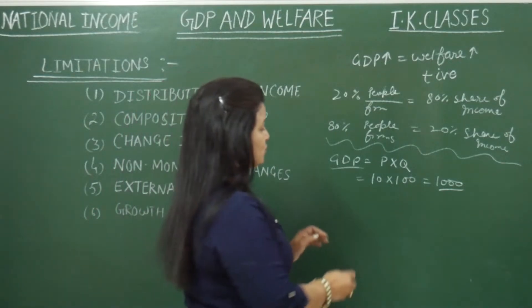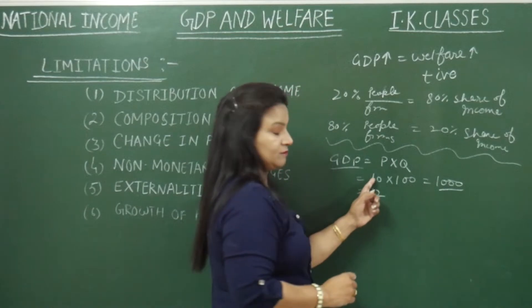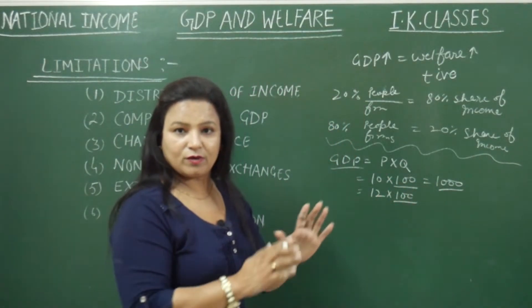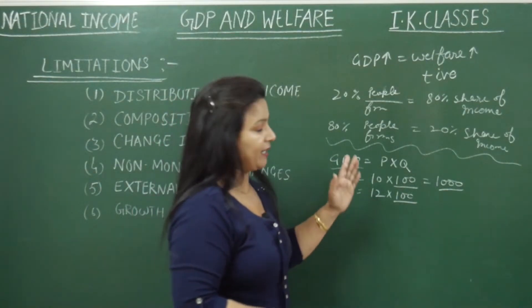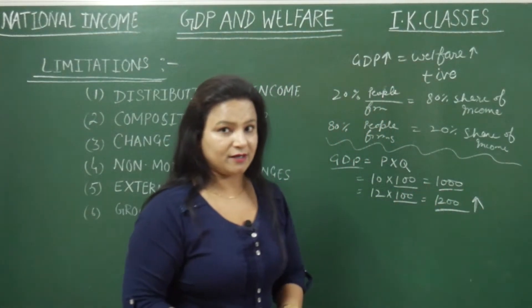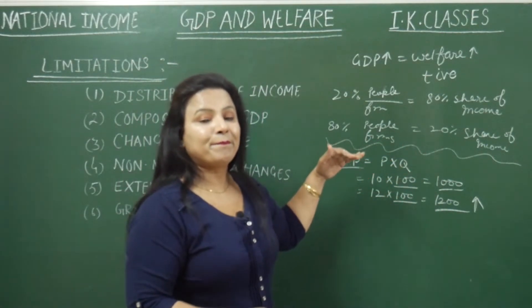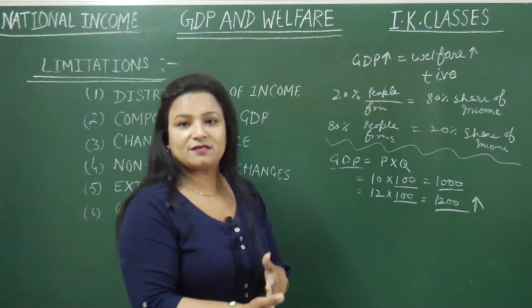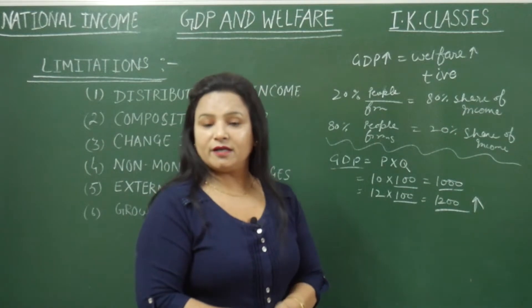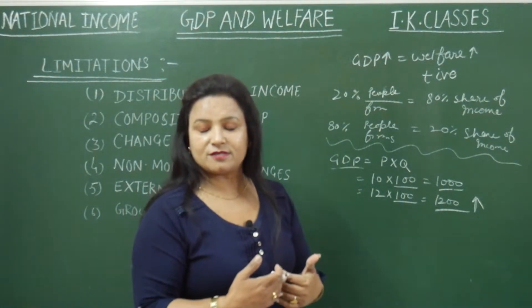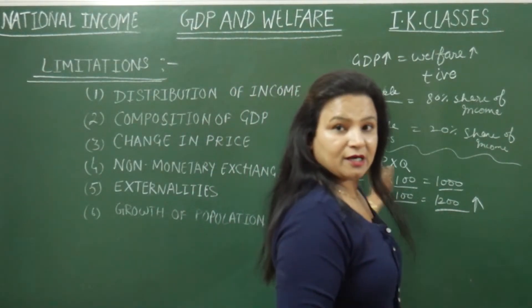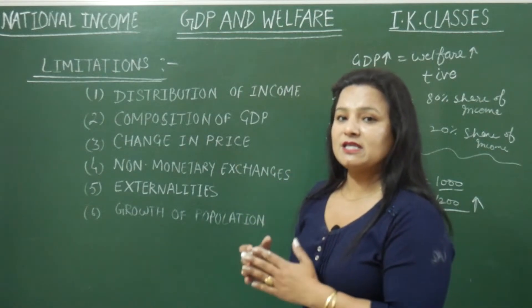Now suppose the price rises to 12 rupees, and the units produced remain 100. The production of goods and services is still only 100 units, but the value of GDP rises due to the price rise. So per head availability of goods and services does not actually increase. This is a very important limitation — if price increases, GDP value rises but people's welfare does not rise.